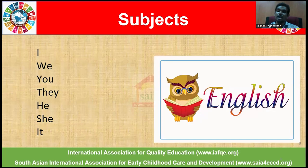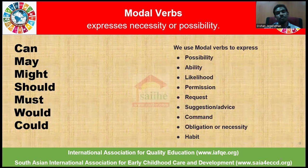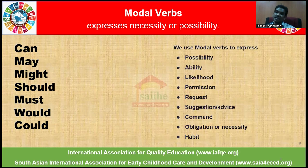The subjects, as we all know by now, are I, you, we, they, he, she, it — referring to first person, second person, and third person narrative. The modal verbs we've been going through in lessons 13 and 14 are can, may, might, should, must, would, and could. Modal verbs help to express necessity or possibility, as discussed in the previous lesson.